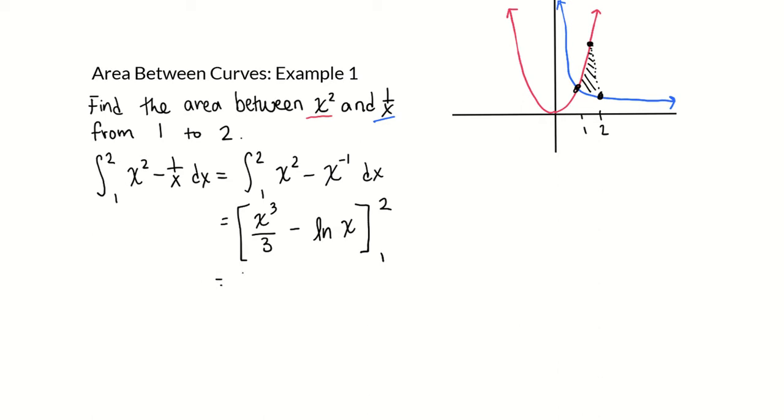So first we're going to plug in x equals 2 into this antiderivative function and then we'll plug in x equals 1. Plugging in x equals 2, we get 2 to the third over 3 minus ln of 2, and then plugging in x equals 1, we get 1 to the third over 3 minus ln of 1.